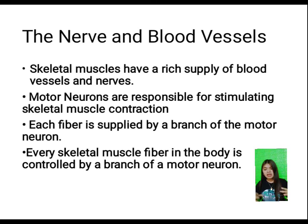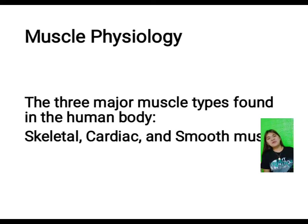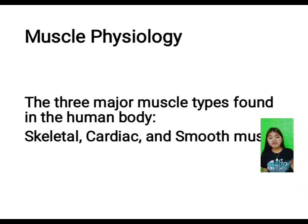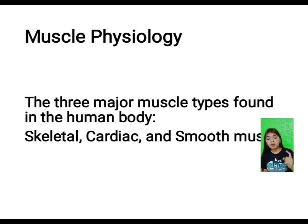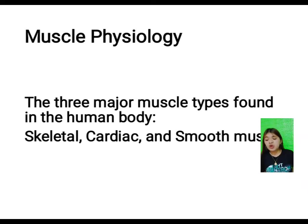Every skeletal muscle fiber in our body is controlled by a branch of a motor neuron. Moving on to muscle physiology: there are three major muscle types found in the human body — skeletal muscle, cardiac muscle, and smooth muscle — each with unique cellular components, functions, physiology, and pathology.